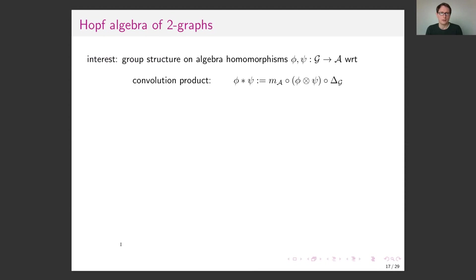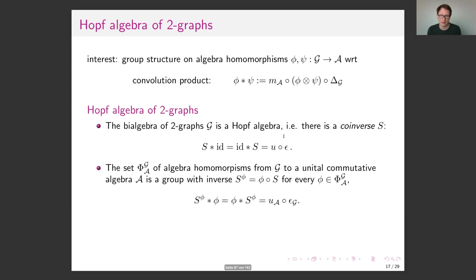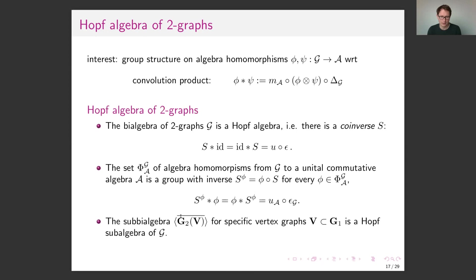What one needs to renormalize amplitudes is algebra homomorphisms evaluating the amplitudes, and the usual convolution product. With respect to this, one finds a co-inverse, and importantly this gives a group structure on the amplitude maps — the algebra homomorphisms. The theory space (the sub-Hopf algebra for specific vertices) is also a sub-Hopf algebra.